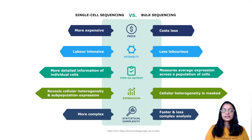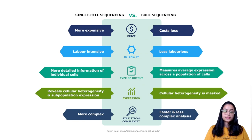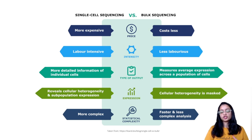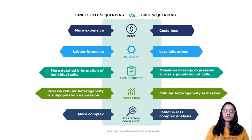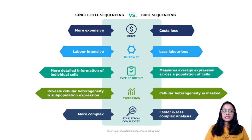Comparing single-cell sequencing with bulk on non-technical aspects like price: single-cell sequencing is more expensive than bulk sequencing and is more labor intensive. The output from single-cell sequencing is more detailed because we have information from individual cells, as opposed to bulk sequencing where expression is averaged across all populations of cells. In addition, the expression is more heterogeneous and we have expression from subpopulations as well.